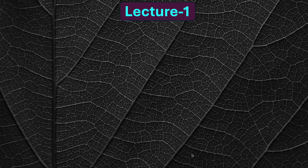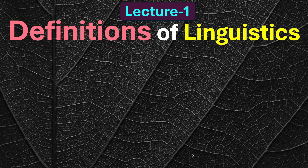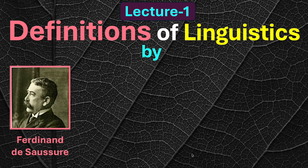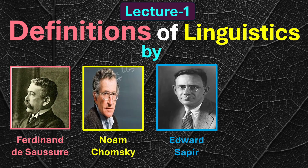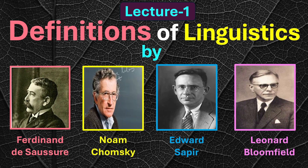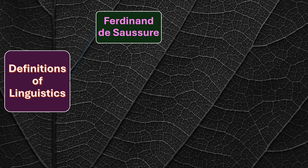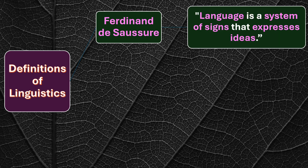Hello and welcome to a new lesson: Definitions of Linguistics by Ferdinand de Saussure, Noam Chomsky, Edward Sapir, Leonard Bloomfield, and many others. Let's discuss the topic. According to Ferdinand de Saussure, language is a system of signs that expresses ideas. The key point is that language is a system of encoding and decoding with the help of which we as humans express our ideas.